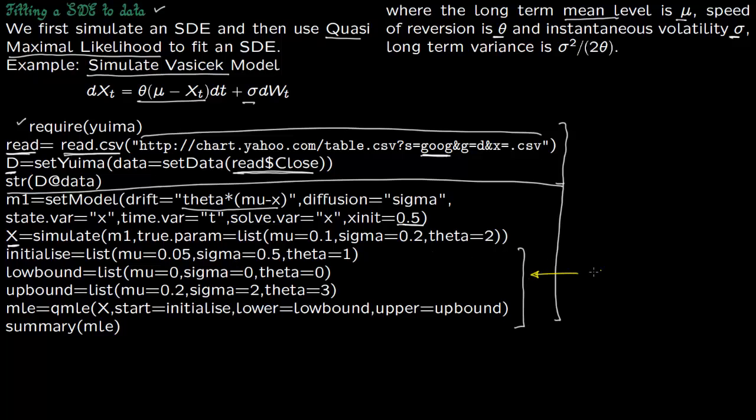So here we are going to fit data to our SDE. So you got to initialize it, so you initialize the value - say you take mu as 0.05, sigma as 0.5, theta as 1, and you have to give a lower bound and an upper bound.